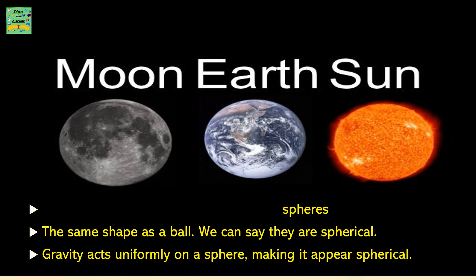The Earth, the Sun, and the Moon are all shaped like a ball. The same shape as a ball. We can say they are spherical. Gravity acts uniformly on a sphere making it look spherical.